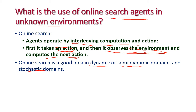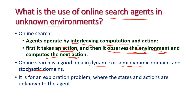The environment is not fully observable — that is called an unknown environment — and it is used for an exploration problem where the states and actions are unknown to the agent. We cannot predict actions prior to executing them because the environment is dynamic, semi-dynamic, or stochastic (non-deterministic).